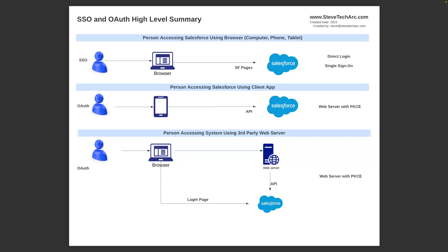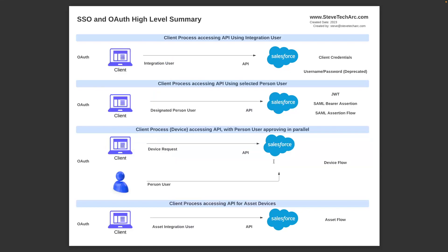In previous videos, we've been walking through a number of authentication flows, either using single sign-on or OAuth. In some cases, the human is involved — single sign-on, the human is involved having a mobile device, or the human is involved going to a third-party web server which will authenticate on behalf of the user. On these additional flows, we may have an integration user calling direct, or a designated person user coming in through a different process. The one we're going to be talking about today is Device Flow.